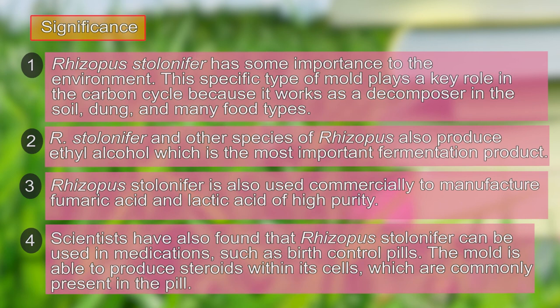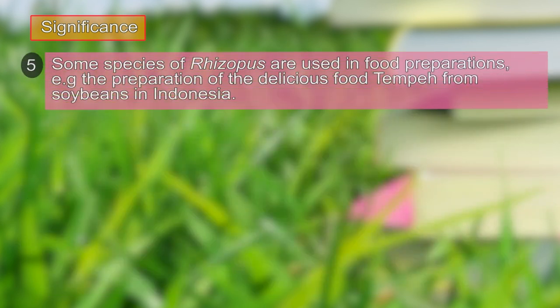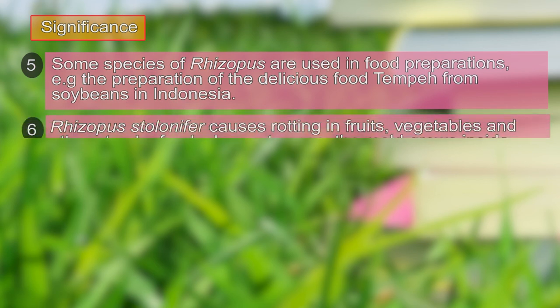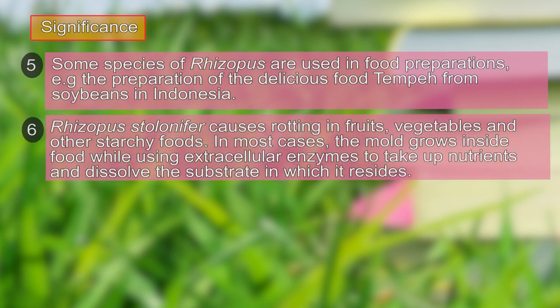Scientists have found that Rhizopus stolonifer can be used in medication such as birth control pills. Some species of Rhizopus are also used in the food industry — for example, in Indonesia, soybeans are fermented with Rhizopus species to prepare a delicious food called tempeh. On the other hand, Rhizopus is responsible for economic losses in the food industry, as it grows on fruits, vegetables, and starchy materials.